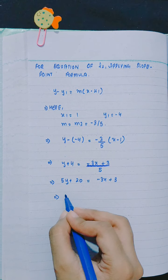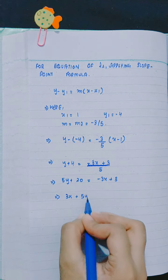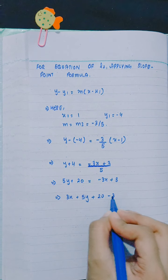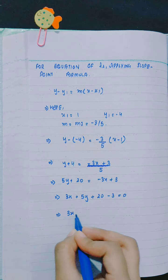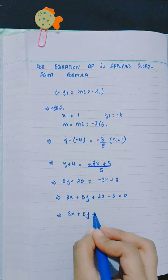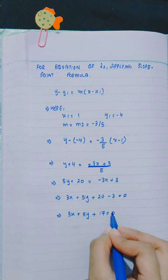Rearranging: 3x plus 5y plus 20 minus 3 equals 0. Therefore, 3x plus 5y plus 17 equals 0.